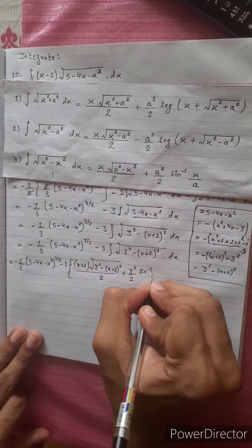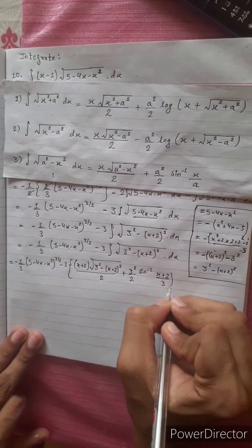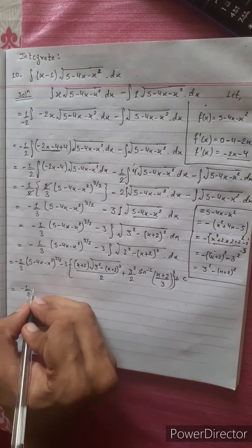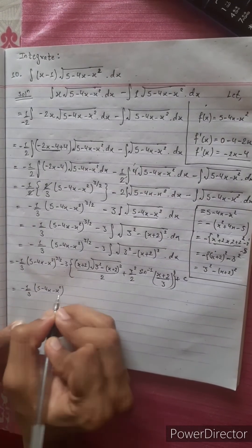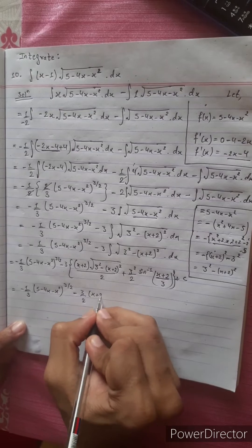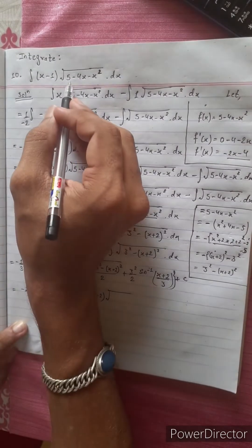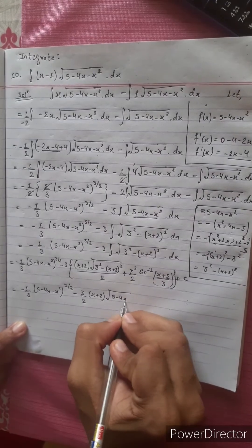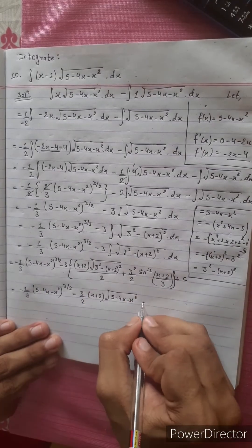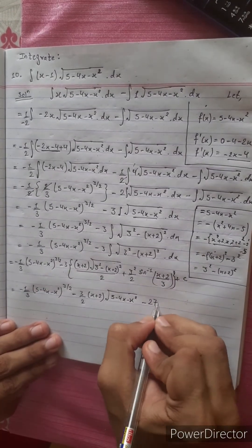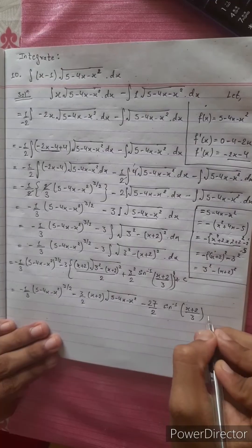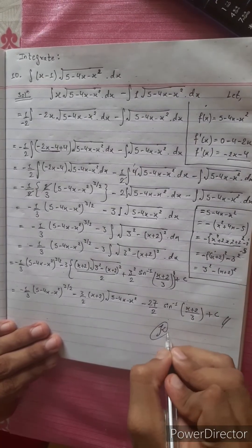The final answer is: sin⁻¹((x + 2)/3) + C = (-1/3)(5 - 4x - x²)^(3/2) - (3/2) terms plus the remaining integration terms, giving sin⁻¹((x + 2)/3) + C. That is the answer.